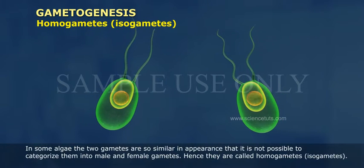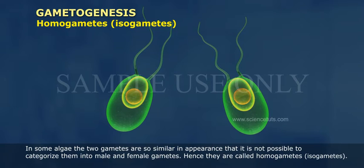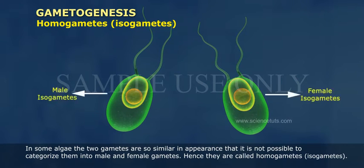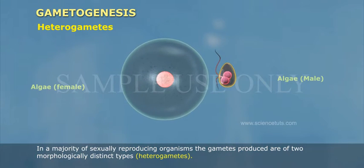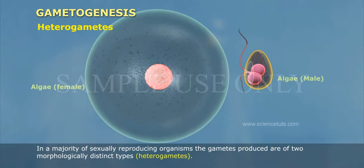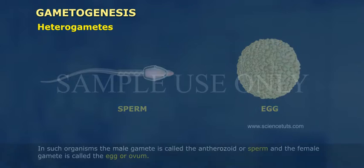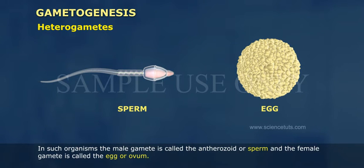In some algae, the two gametes are so similar in appearance that it is not possible to categorize them into male and female gametes. Hence, they are called homogametes or isogametes. In a majority of sexually reproducing organisms, the gametes produced are of two morphologically distinct types, called heterogametes. In such organisms, the male gamete is called the antherozoid or sperm and the female gamete is called the egg or ovum.